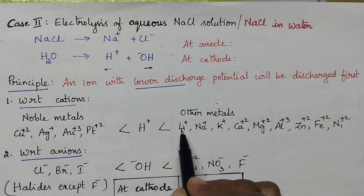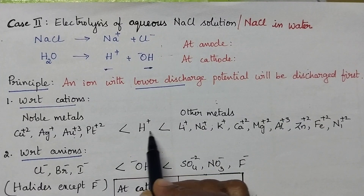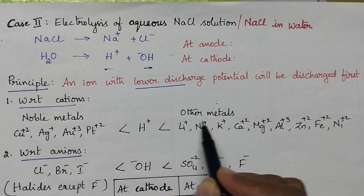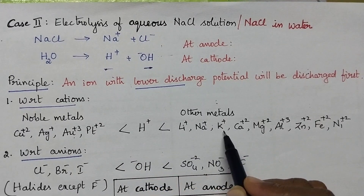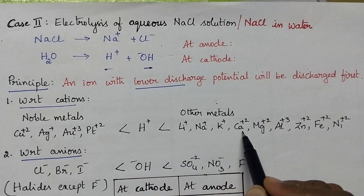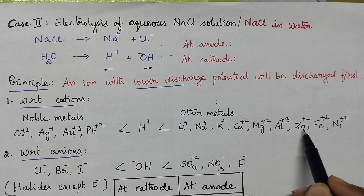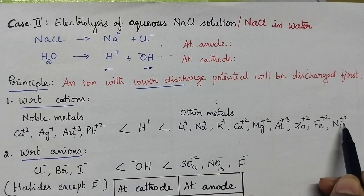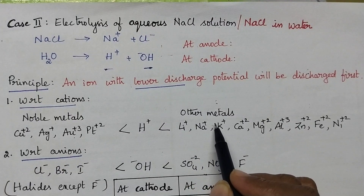H⁺ ions have lower discharge potential than other metals. So in the presence of other metals, H⁺ ions will always be discharged first. Other metals here means lithium, sodium, potassium, thallium, magnesium, aluminium, zinc, iron, and nickel.